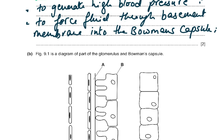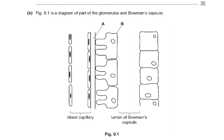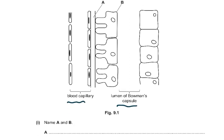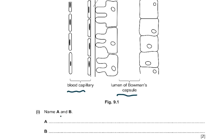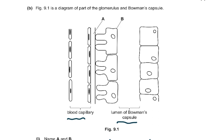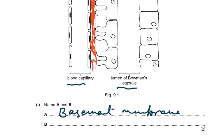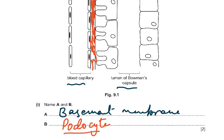Figure 9.1 is a diagram of part of the glomerulus and Bowman's capsule, showing the blood capillary and the lumen of the Bowman's capsule. The question asks to name structures A and B. A is the basement membrane — you can see this area which is the basement membrane. B is the podocyte — the arms of the podocyte wrap around it. These words are underlined, so you must use exactly the same words to get the two marks.